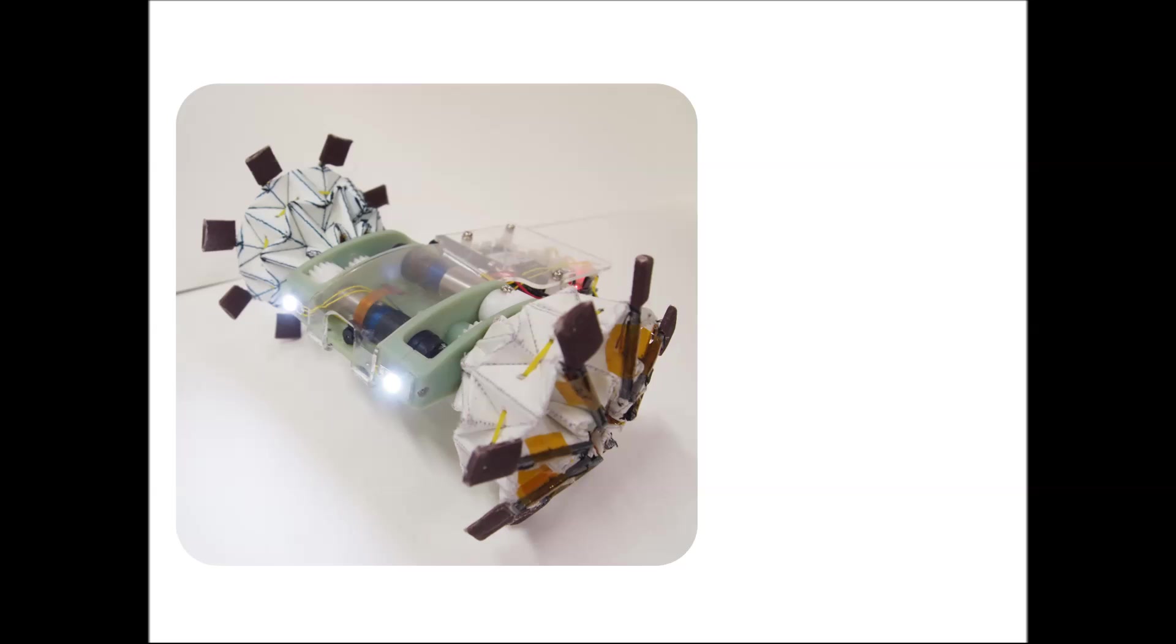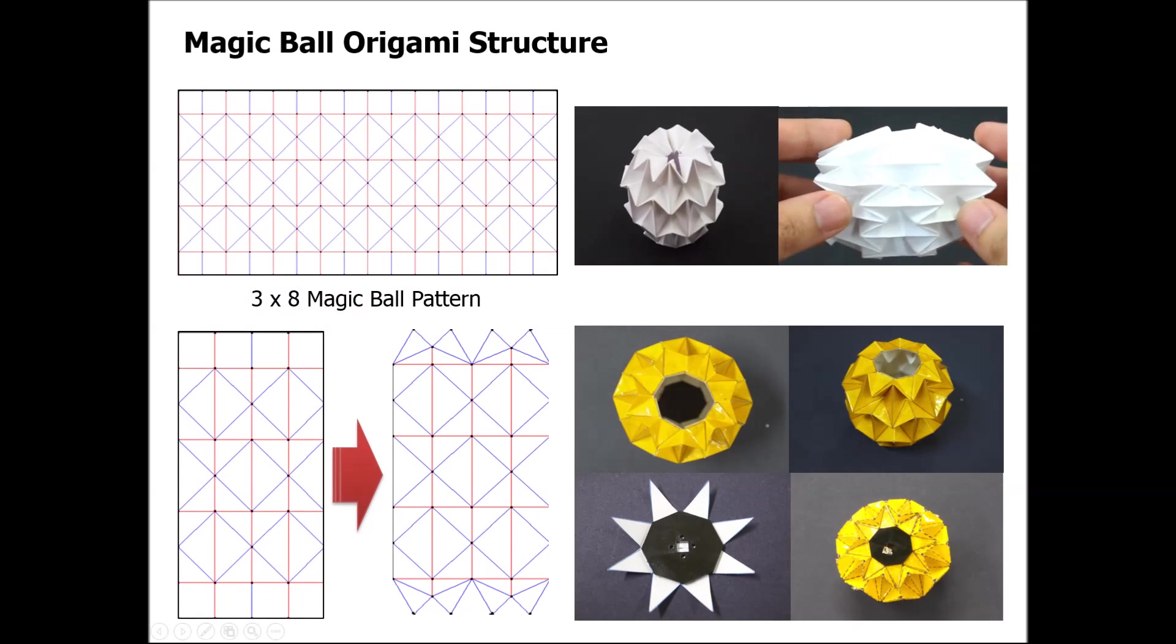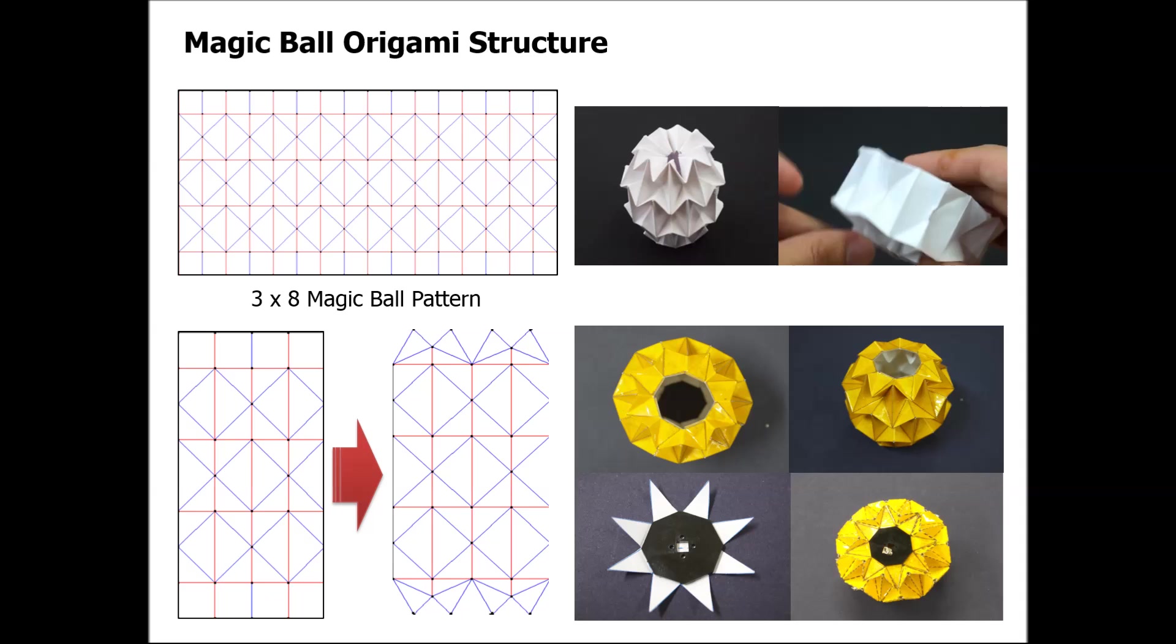To build an origami wheel robot, we needed to solve three issues. First is wheel pattern design, second is fabrication, and third is actuation. The origami pattern for the wheel was made by using one of the most famous origami patterns, the magic ball pattern. To make a wheel with this pattern, additional spoke design was used.